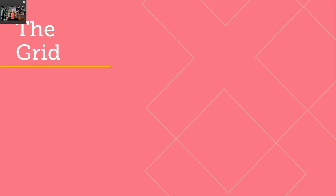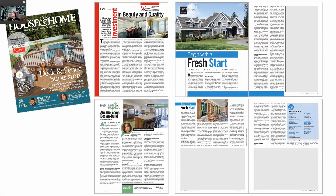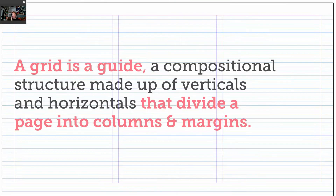Now let's talk about the grid. A grid is your underlying structure for multi-page design — magazines, catalogs, brochures, websites, books — anything with multiple pages. It gives your document unity, alignment, flow, and improves readability. Defined formally, a grid is a compositional structure made up of both verticals and horizontals that divide a page into columns and margins.